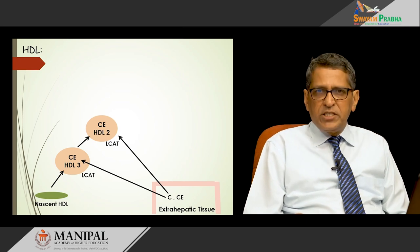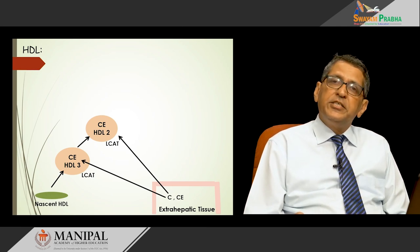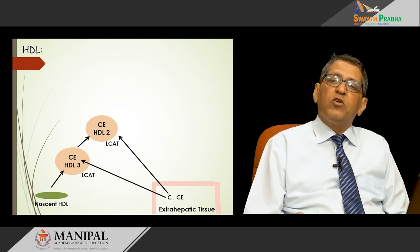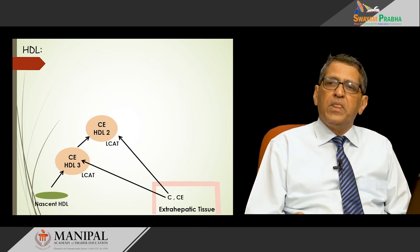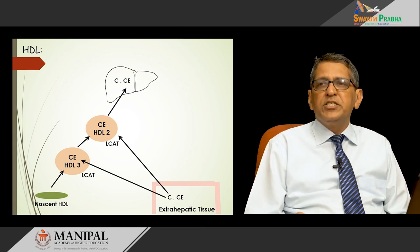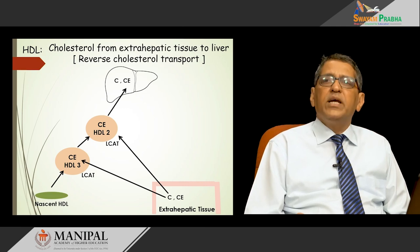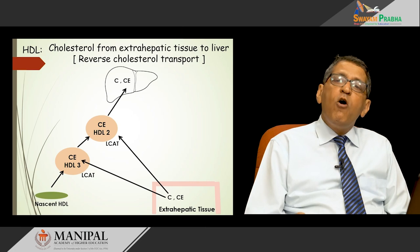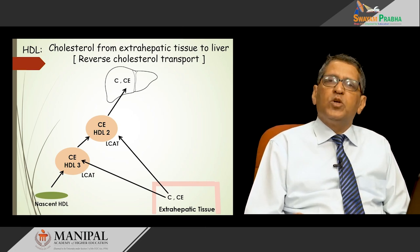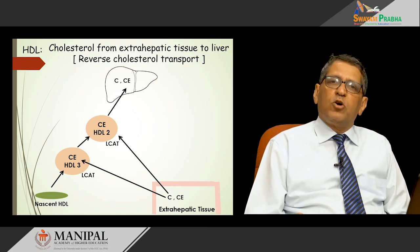HDL3 takes up more cholesterol from extrahepatic tissues and slowly becomes HDL2, which has a much higher cholesterol ester concentration. HDL2 finally transfers its cholesterol and cholesterol ester to the liver. The function of HDL is to transfer cholesterol from extrahepatic tissues to the liver — also known as reverse cholesterol transport — unlike LDL which is involved in forward cholesterol transport.